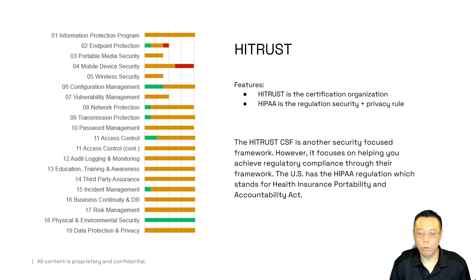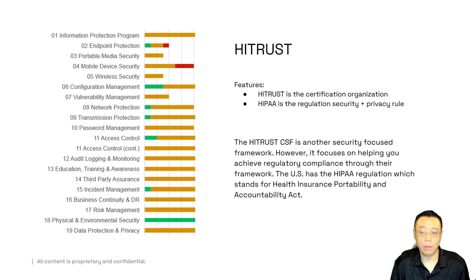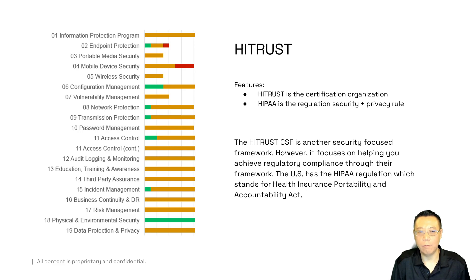HITRUST is one of the cybersecurity frameworks, but it's not a regulation. It actually helps you achieve a certain level of attestation against HIPAA — the Health Insurance Portability and Accountability Act — which creates a security and privacy ruling requiring a certain level of cybersecurity. The HITRUST framework sits on top of that regulation and helps understand which actual controls need to be put in place. There are a total of 19 domains, anywhere from actual data protection all the way down to privacy and physical environment.